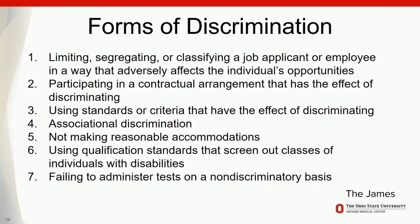Associational discrimination is when a spouse, child, or family member has a disability, or when you participate in an event around disability — like a walk or a fundraising event — and people treat you differently based on your association with individuals who have disabilities. Not making reasonable accommodations when requested, using qualification standards that screen people out, and failing to administer tests on a non-discriminatory basis are also forms of discrimination. If you have a certification or credentialing test in the workplace and it's not administered fairly and with appropriate accommodations as needed, that would be discriminatory.